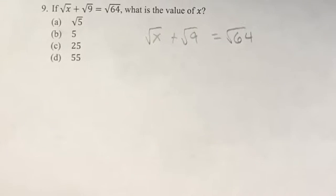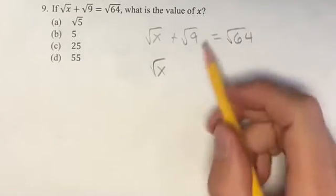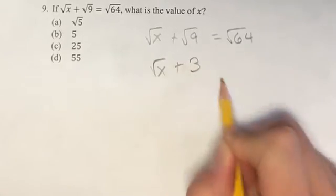The first thing we can do is just simplify some of these square roots. The square root of x we can't do anything with right now. But what is the square root of 9? It's just 3, so we have plus 3.